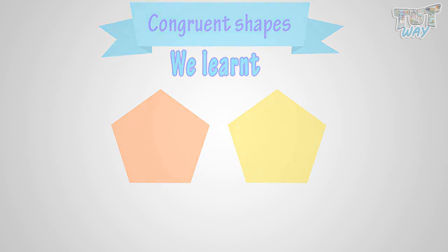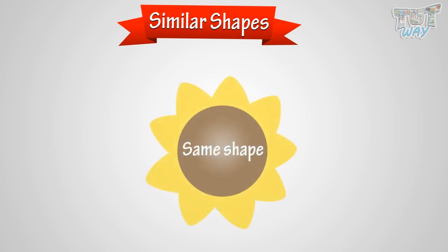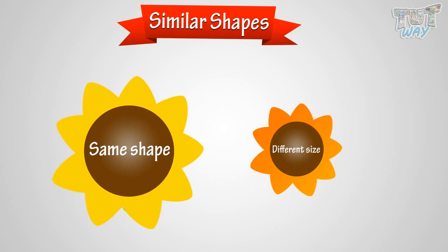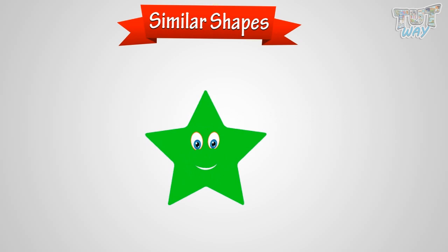Now let's learn what are similar shapes. Shapes that have the same shape but may differ in size are called similar shapes. Let's learn it with the help of an example. Here we have a figure of a star shape.